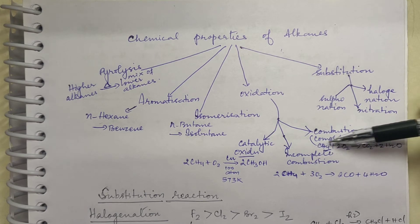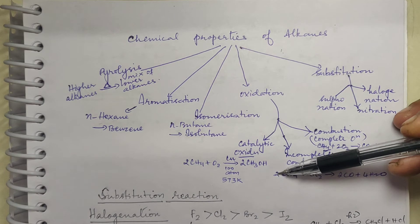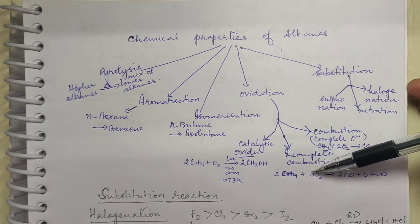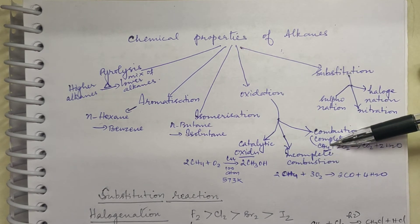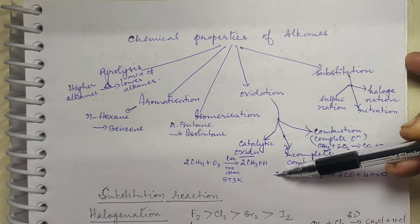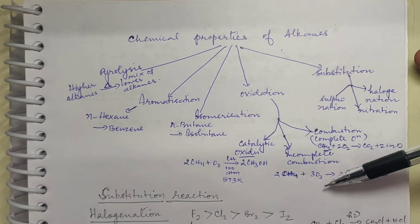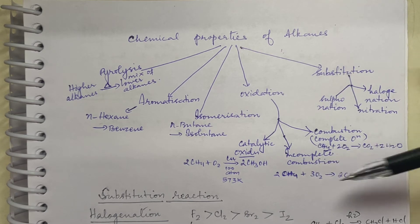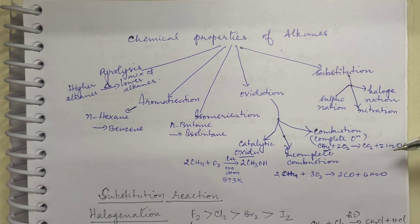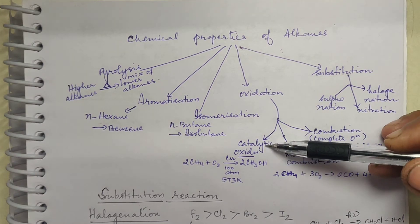For complete combustion: CH4 + 2O2 — fuel and oxygen in ratio 1:2. For incomplete combustion, the ratio is 2:3 instead of 2:4, meaning there is insufficient oxygen. Because of insufficient oxygen, the product formed is not CO2 but CO — carbon monoxide — while complete combustion gives CO2.